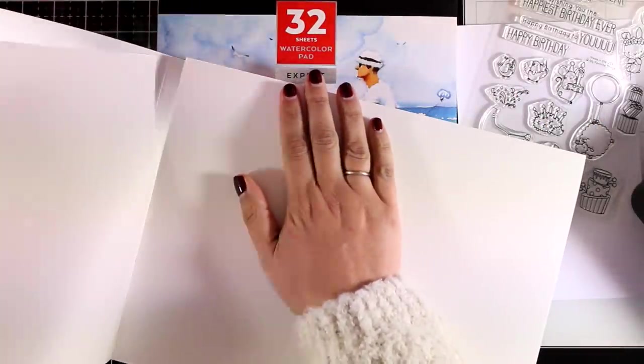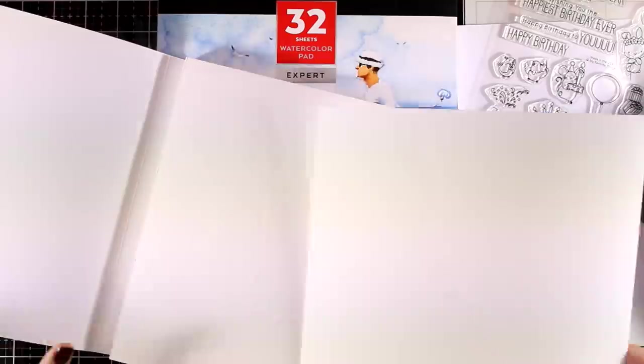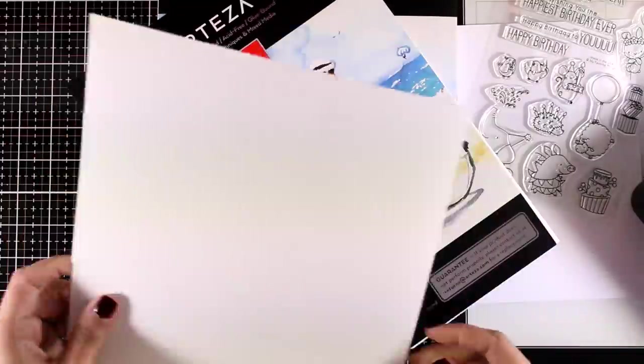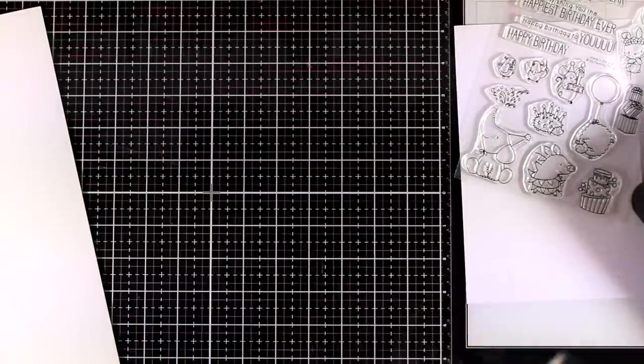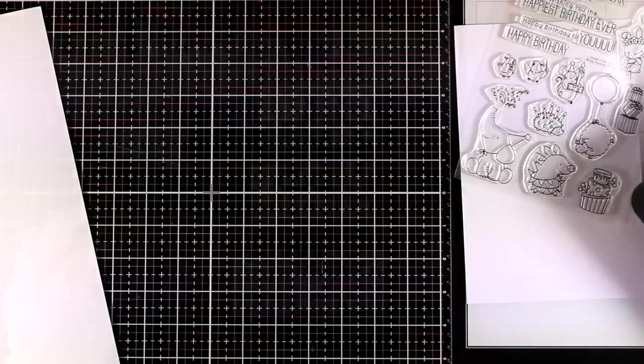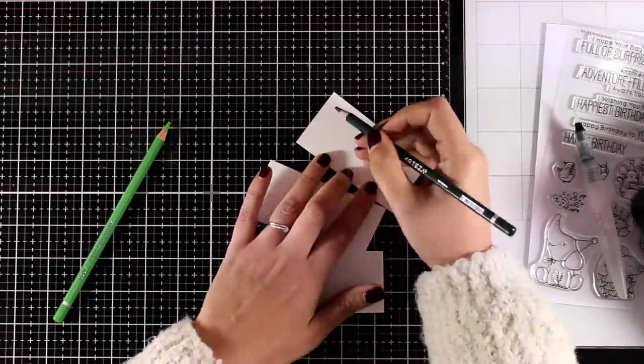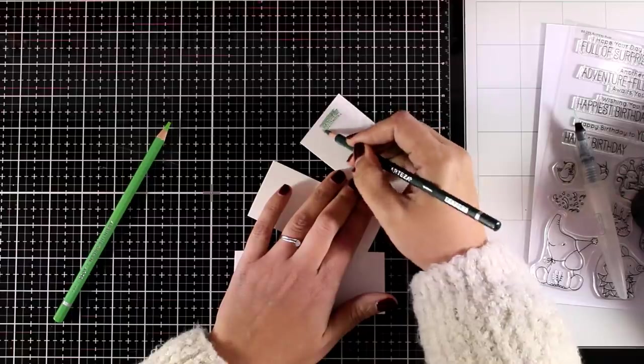For today I'm going to start stamping. Now this watercolor paper has two sides. One of them is quite smooth so you can do your stamping there. The other one is more textured. However, I decided to work on the textured side today just to see how my pencils perform on that side.